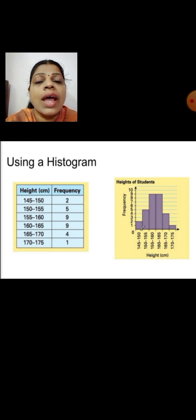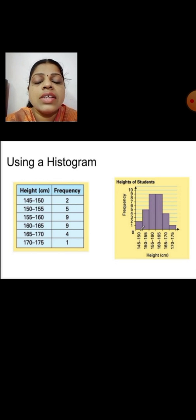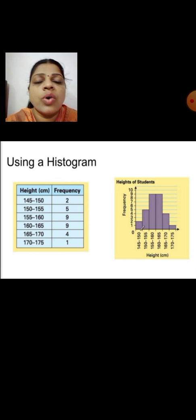In the raw data, different values are given, and according to the range of the data we classify them into different classes with their corresponding frequencies. In our example, the heights of different students are given, and according to the range they are classified into different classes. The frequency column tells us how many students have a particular height in each class group.